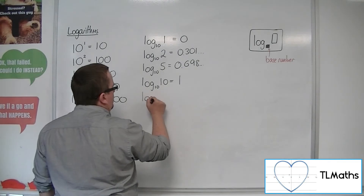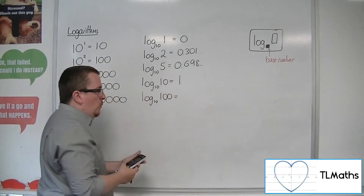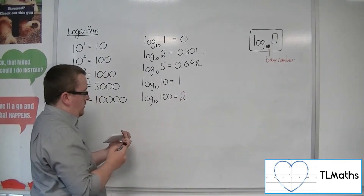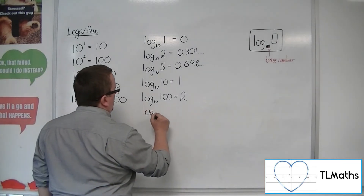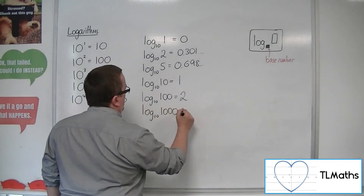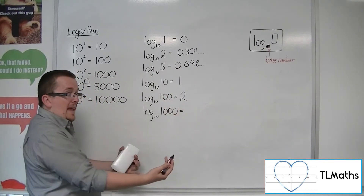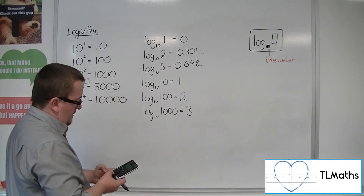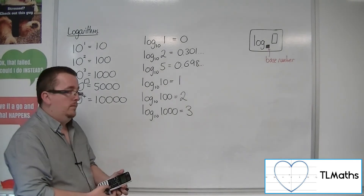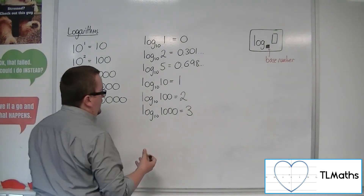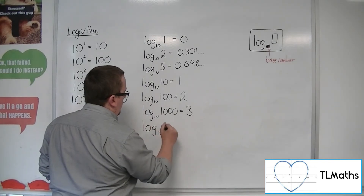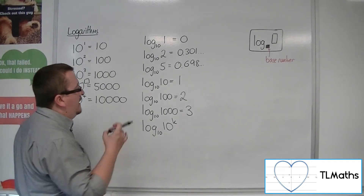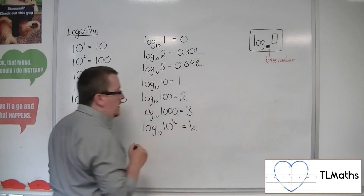So 1 gave us 0, and 10 gave us 1. If we try 100, log base 10 of 100 is 2. And then log base 10 of 1,000 — our guess would probably be 3. So try on your calculator: log of 1,000 is 3. You could generalize that to say log base 10 of 10 to the k — whatever that k is — will be what you get out.